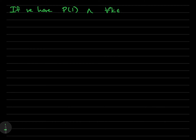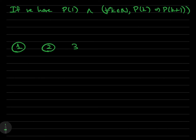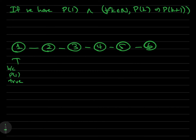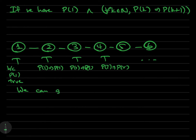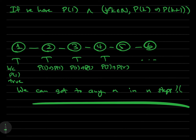If we have that p(1) is true, and for all k in the natural numbers p(k) implies p(k+1), the idea behind induction goes like this. Let's think of the natural numbers as a chain of beads going off to the right: 1, 2, 3, and so forth. We know 1 is true because we have p(1) as true. We know 2 is true because p(1) implies p(2) and p(1) is true. We know 3 is true because p(2) implies p(3) and 2 is true. Following this logic, we can get to any n in n steps.